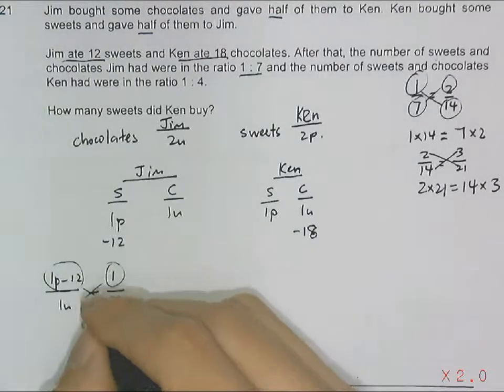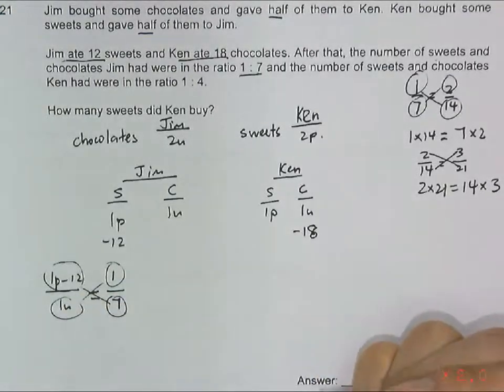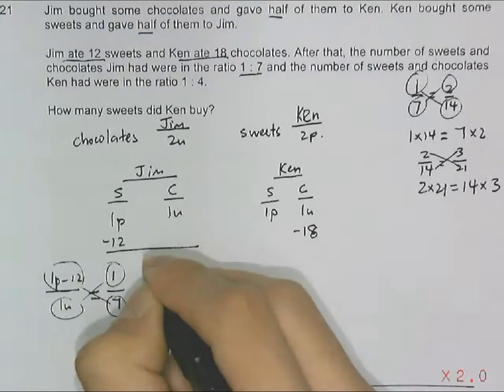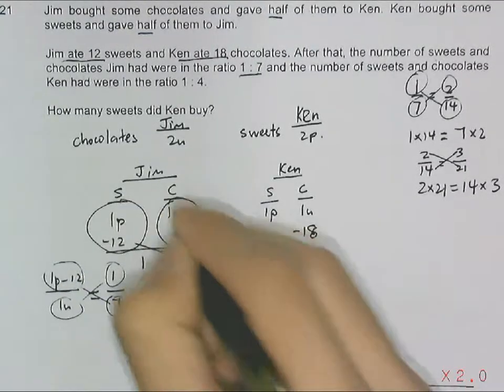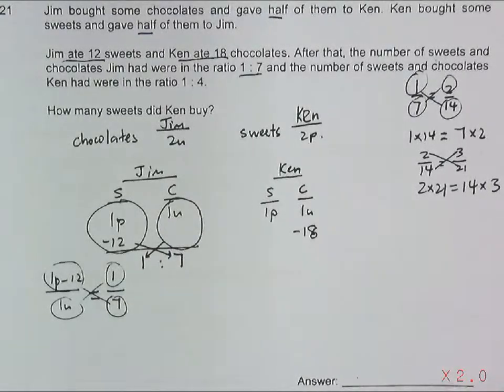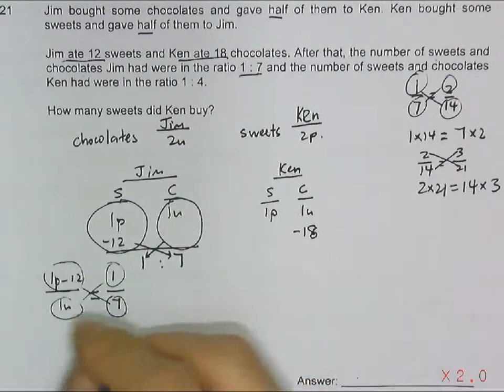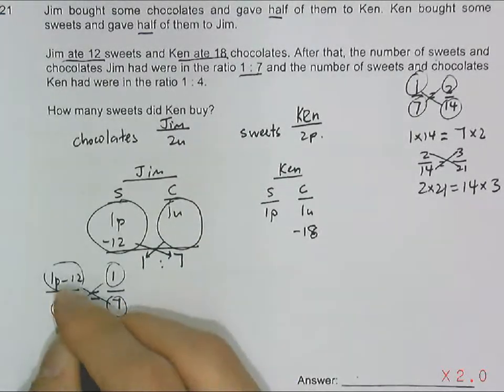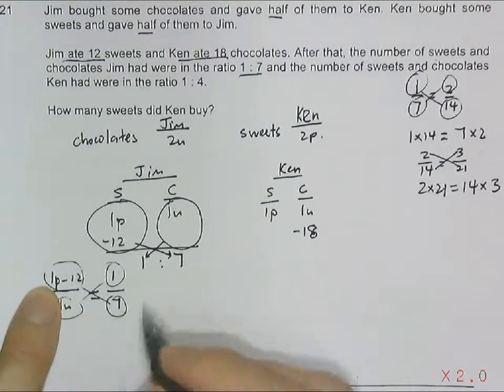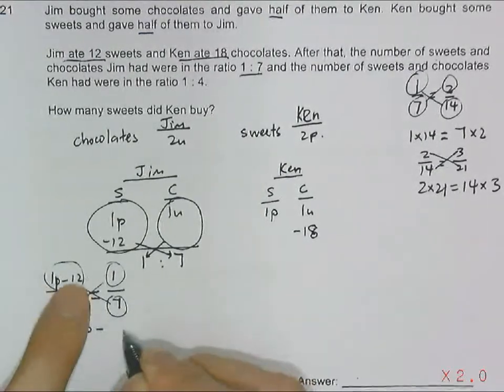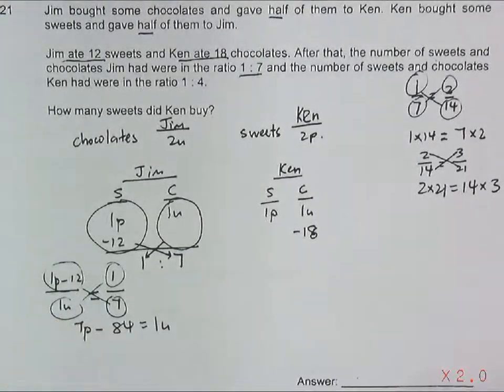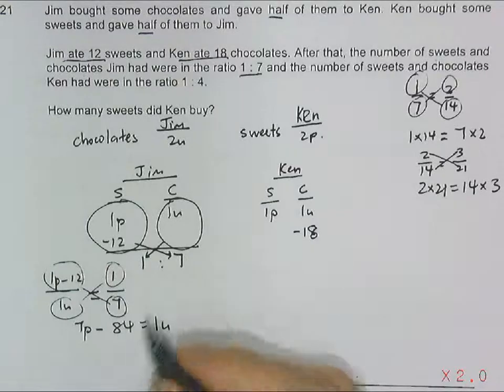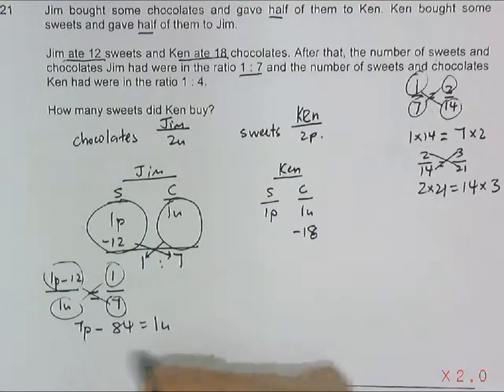1 times 1 - or you just do it this way: 1 is to 7, and you box this up, or circle it, then you cross and multiply them. This cross multiplication will give us 7 parts minus 84 equals 1 unit. We need this information - it tells us the relationship between 7 parts and 1 unit.